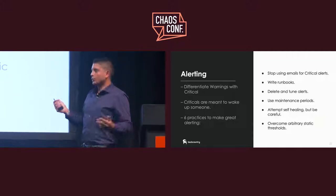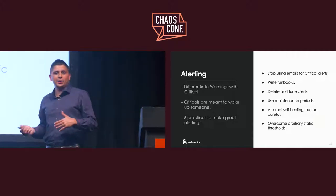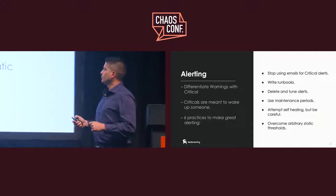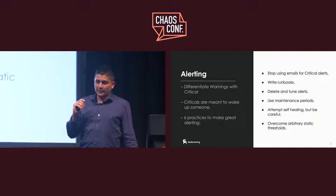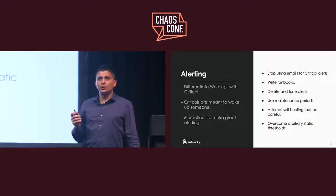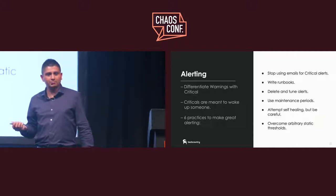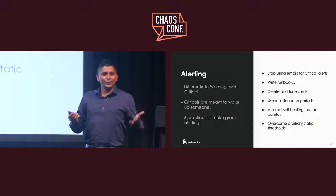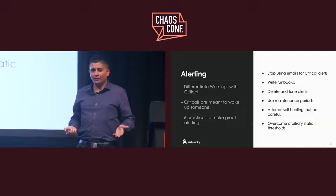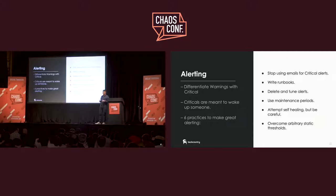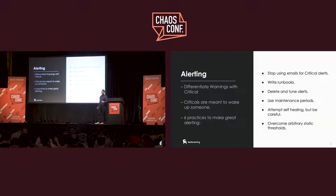Use maintenance periods: if you're deploying something that will look like an outage, use a maintenance window — you don't want to page people just because of a deployment. Attempt self-healing, but be careful. For those familiar with Node.js and Forever: Forever is really useful because it saves you from an outage. But if you're not monitoring Forever, what happened to us is our application was going down every five minutes, Forever kept restarting it, and we didn't notice until our busiest day when Forever finally gave up and we had to find out the hard way.